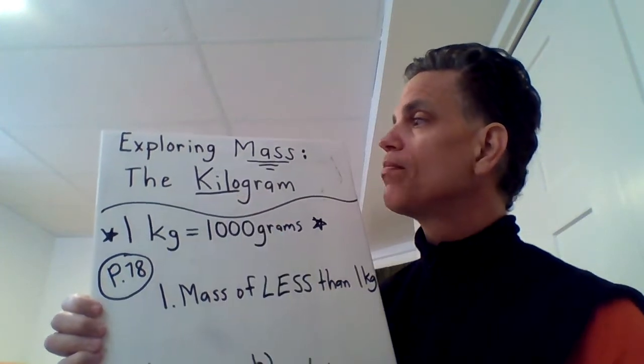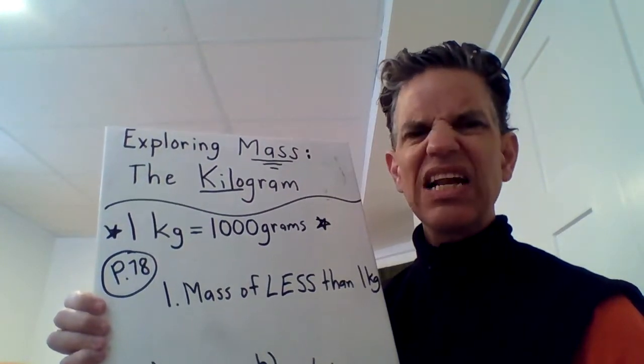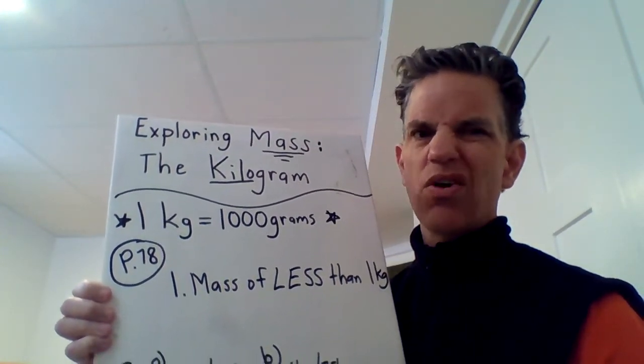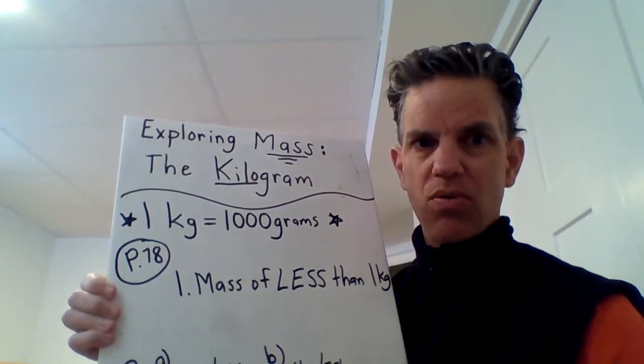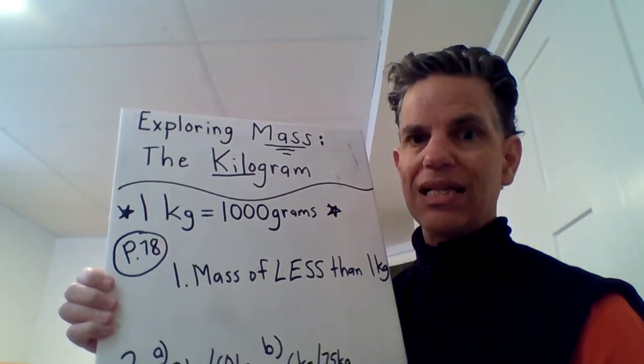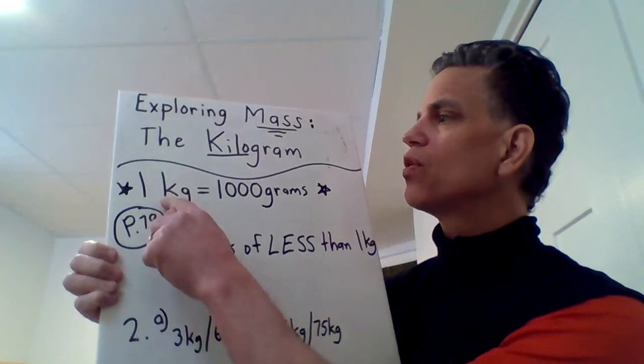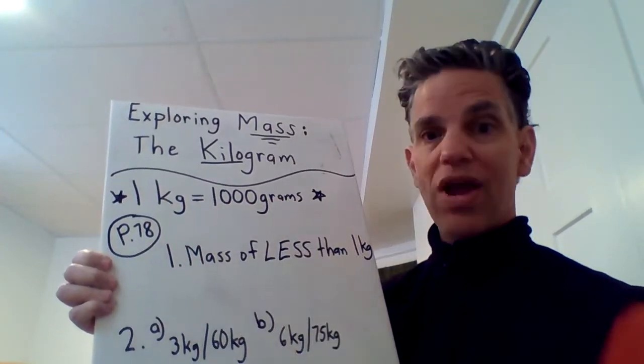In a kilogram there's one thousand little itty bitty grams that are about a paper clip weight in each kilogram. So one kilogram equals one thousand grams. Good to know.